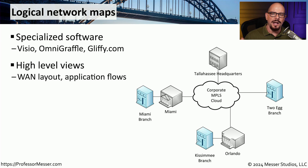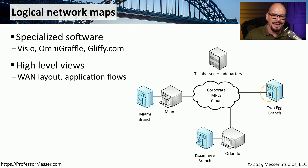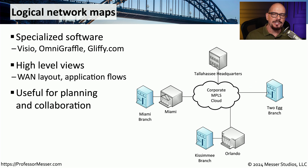Logical network maps show a higher level view of connectivity where you're not focused on individual interfaces and cables, but more on how the entire network is connected. This is a logical network map that shows a cloud connection in the middle and different headquarters buildings connected from different locations into that single cloud. Obviously, in the middle of all of this are a number of routers, switches, and other servers, but all of that is broadly shown as a single location. These might be good maps to use if you're planning additional locations — you can view the layout of the existing wide area network cloud and then decide where the best location might be for another installation.